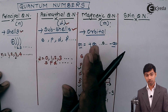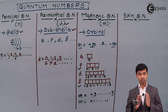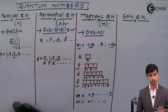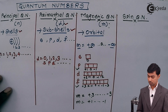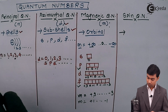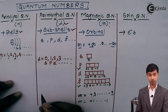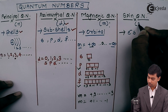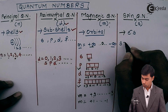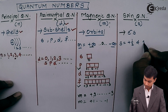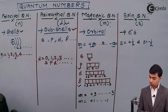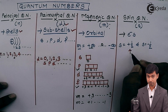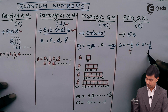The next quantum number is the spin quantum number. We have been moving from shells to subshells to orbitals — going deeper inside an atom. Inside the orbital, there are electrons. So the spin quantum number gives information about electrons. It is denoted by small s, and it has only two values: s equals plus half and s equals minus half.